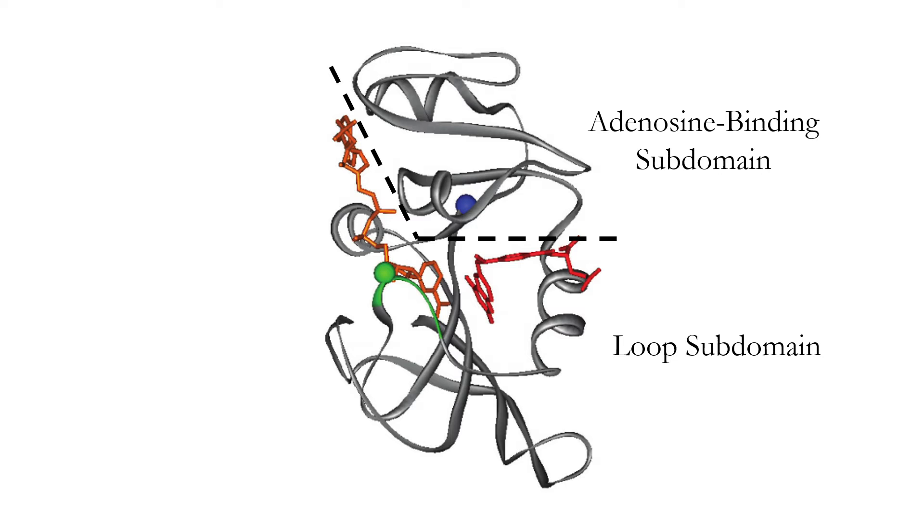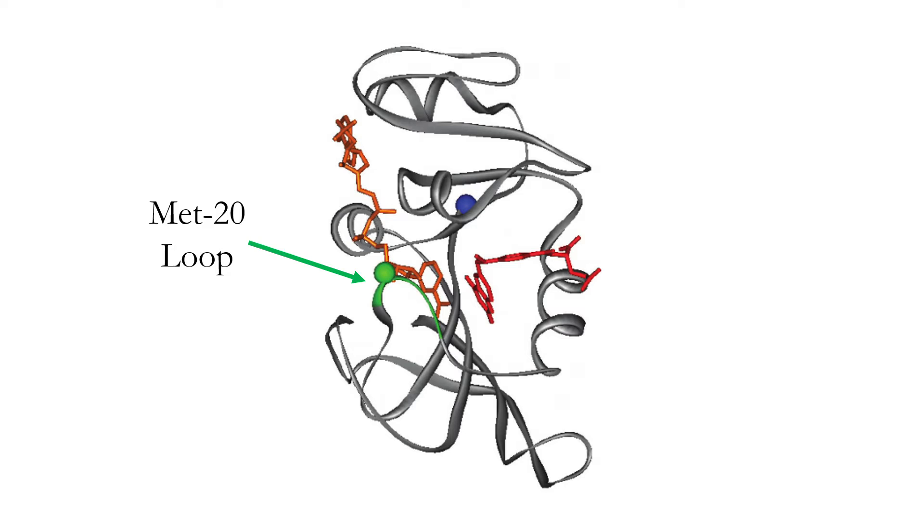The adenosine binding subdomain binds and stabilizes the adenosine ring within NADPH. The loop subdomain contains three short sequences of amino acid residues called loops: the MET20 loop, the FG loop, and the GH loop. The MET20 loop contains the 9th through 24th residues in DHFR. This loop of amino acids is essential for stabilizing the nicotinamide ring and NADH. If you recall, the nicotinamide ring contains the protons which will be donated to reduced dihydrofolate, so stabilizing this ring is crucial for DHFR's catalytic activity.